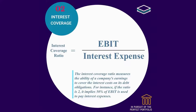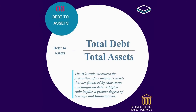Interest coverage ratio is equal to earnings before interest and taxes divided by interest expense. It measures the ability of a company's earnings to cover the interest costs on its debt obligations. For instance, if the ratio is 2, it implies 50% of EBIT is used to pay interest expenses. Debt-to-assets ratio is equal to total debt divided by total assets. It measures the proportion of a company's assets financed by short-term and long-term debt. A higher ratio implies a greater degree of leverage and financial risk.